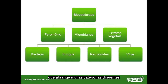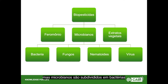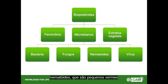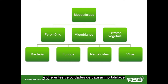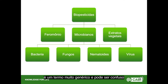Biopesticide is a term covering many different categories: pheromones, microbials, and plant extracts. Microbials are further split into bacteria (e.g., BT), fungal (e.g., Metarhizium), nematodes — little worms very good for soil pests such as slugs — and viruses, which are very good for lepidopteran pests. Each category has a different mode of action and speed of kill, so it's important to appreciate that biopesticides is a very generic and potentially confusing term.